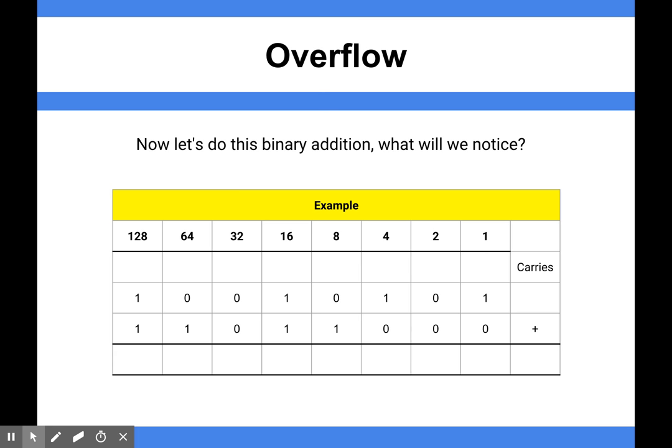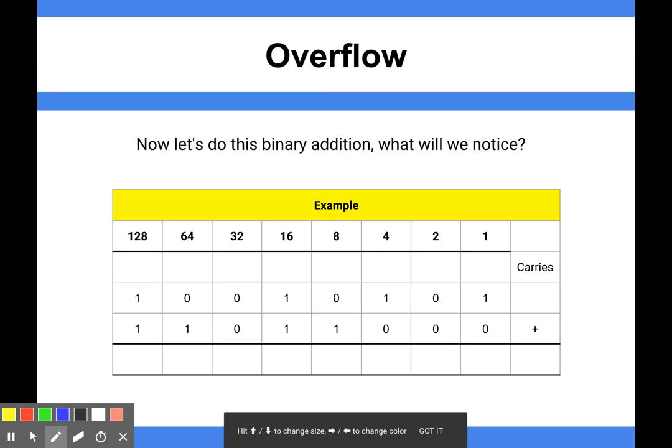Okay, so we're going to do a binary addition here. Let's just get my pen out. We'll do a binary addition, and then something's going to happen and we'll explain it. So 1 plus 0 is 1, 0 plus 0 is 0.